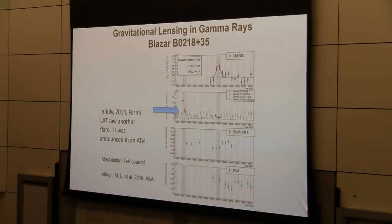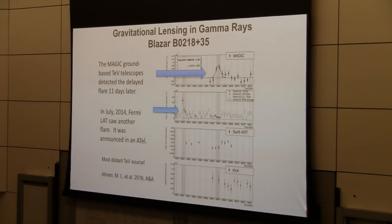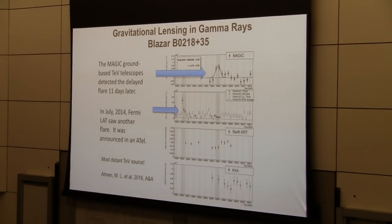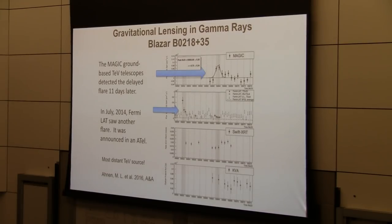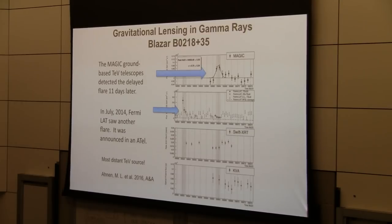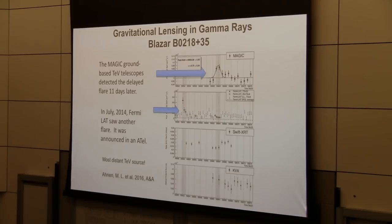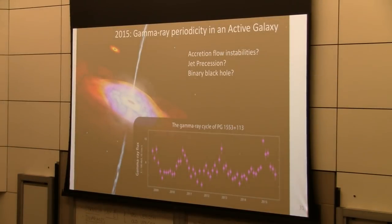If we see a flare from this object, we can tell other people that a gamma ray flare is coming because there will be another one 11 and a half days later. So in July 2014, we saw another flare and we announced it. The TeV observatory MAGIC went to take observations and they saw the delayed flare 11 days later. This made it the most distant blazar that has ever been seen by a ground-based gamma ray observatory.